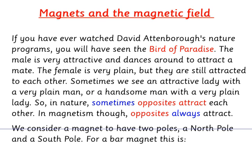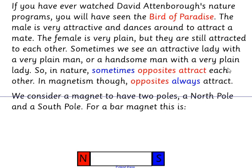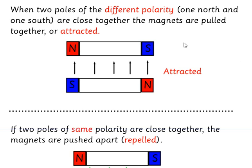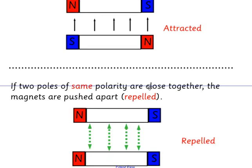We can consider a magnet to have two poles, a North Pole and a South Pole. For our magnet, this is like so. North Pole, South Pole. So we have two magnets, put them close to each other. If the North faces the South, then these magnets are pulled together, attracted. Here they're repelled, here they're repelled.